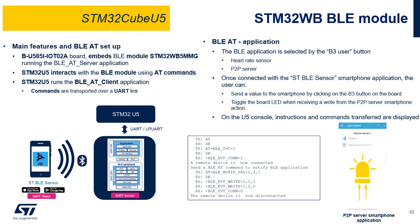The STM32WB MCU brings Bluetooth Low Energy connectivity to the STM32U5. Its innovative architecture is based on two totally independent cores optimized for real-time execution, enabling flexible resource use and power management. This module is embedded in the BU585I IoT-02A board. Communication with the STM32U5 is based on AT commands transferred over a UART link. The following applications are available to demonstrate BLE capabilities: heart rate sensor and point-to-point server. Once connected to the ST BLE sensor application on a smartphone, the user can use LEDs and the button to verify communication, with instructions displayed on the STM32U5 console.